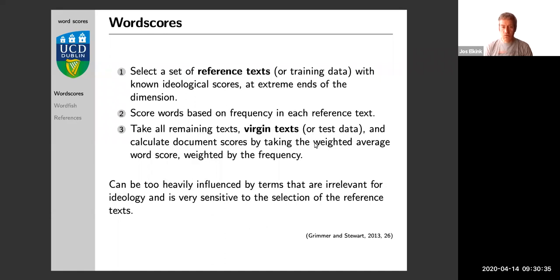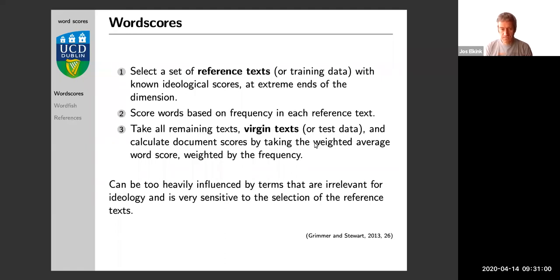Then we take the whole set of virgin texts, and for every word in the virgin text that is also used in one of the reference texts — it has to be, otherwise we do not have a score — we can assign a score based on that calculation, and then simply calculate some kind of weighted average based on frequency. So if there are a lot of words similar to the left-wing text and very few similar to the right-wing text, it will get a relatively high left-wing score.